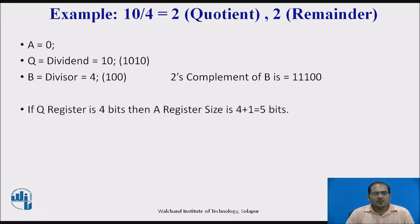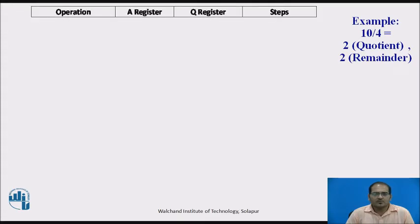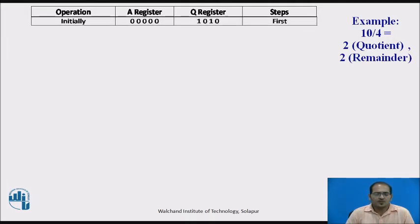If the Q register is 4 bits, then the A register size is 5 bits — one bit is added. If Q is 5 bits, then A contains 6 bits. Now let us see the restoring method in table form. The table has columns for operation, A register, Q register, and step number. There are 4 steps because the Q register is 4 bits. Initially, A contains 5 zeros.